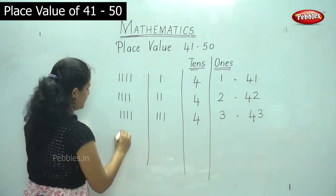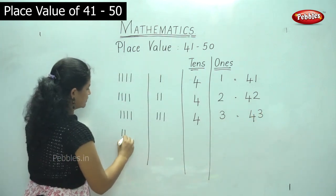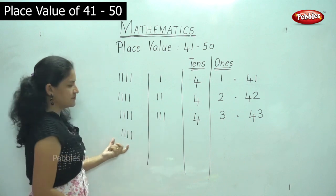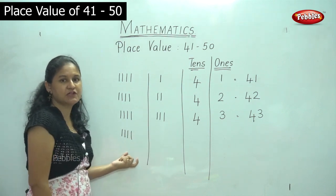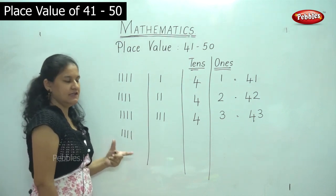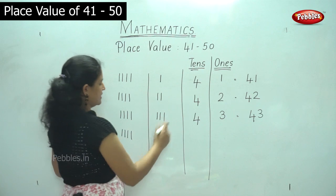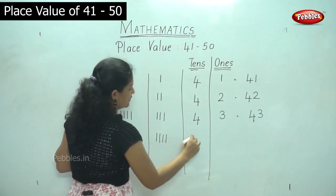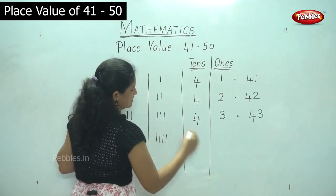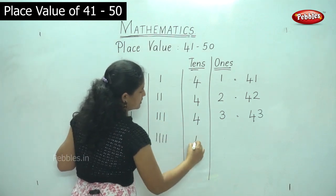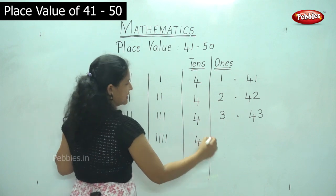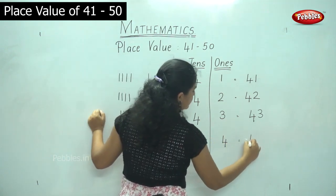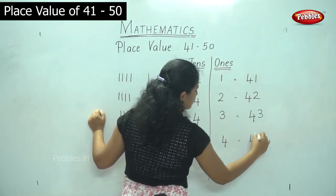Next again I have 1, 2, 3, 4. In the tens place I have 4 tens. I have grouped it into 4 tens and 1, 2, 3, 4 — 4 ones. So I have 4 tens and 4 ones. That gives me the number 44.